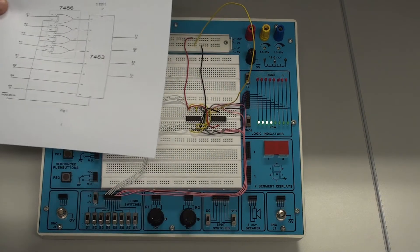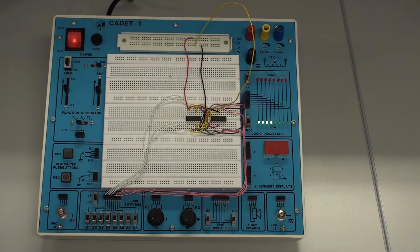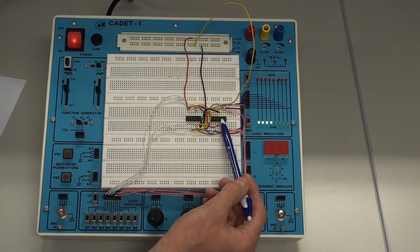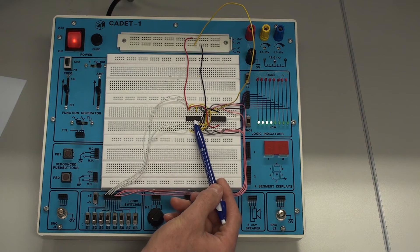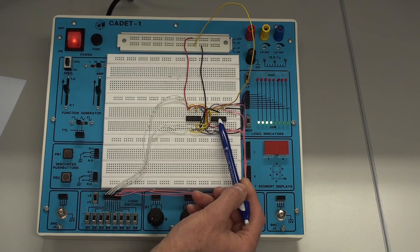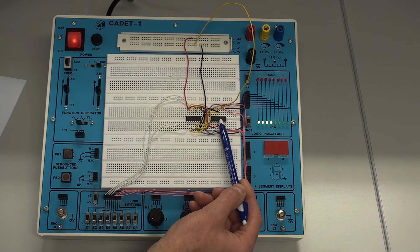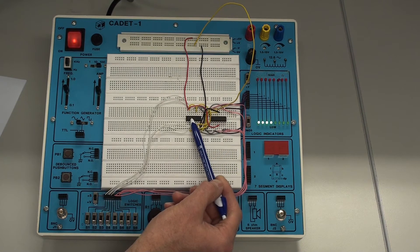So that's the circuit diagram and this is the circuit here configured. Here we have the 7486 and this is the 7483. Sorry, it's the other way around. This is the 7483, this is the adder here, and this is the exclusive OR gate, the 7486.